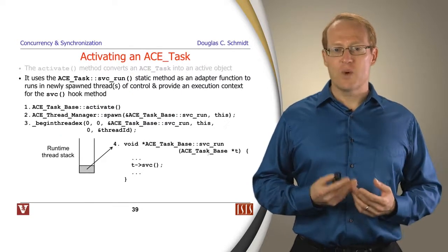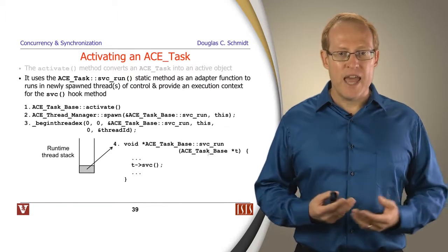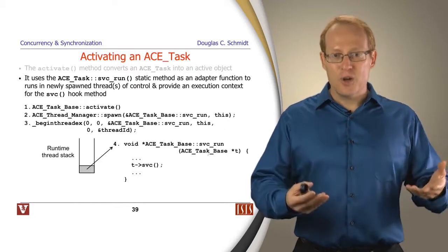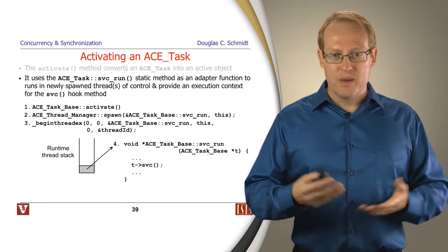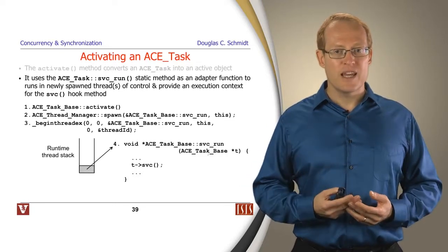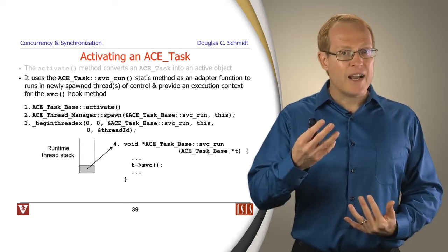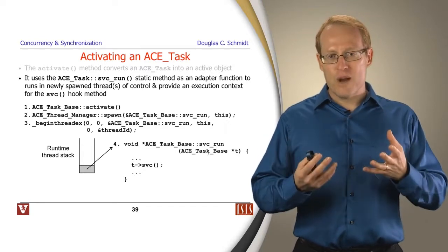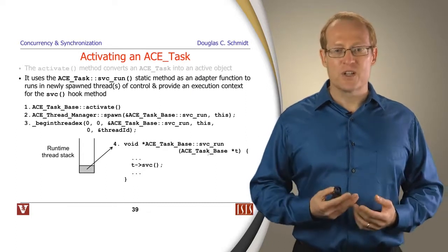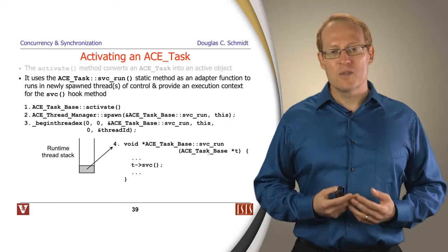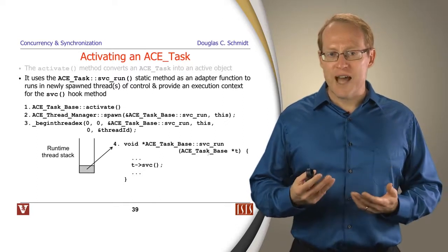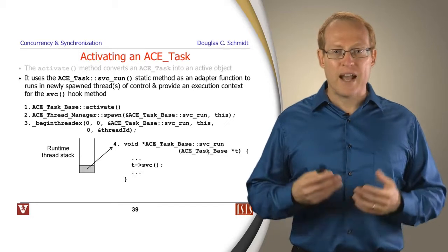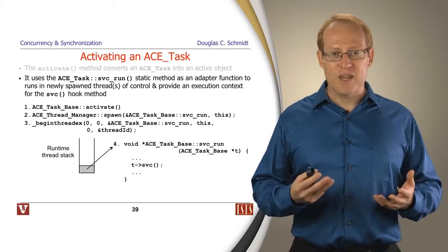When you call activate, what actually happens under the hood is that it uses some mechanisms available in ACE. It goes ahead and calls the ACE thread manager spawn method, and that in turn will reach down into the low-level operating system portability layer and call whatever OS-specific thread creation routine is needed, which in turn will create a stack to run the thread on. And passed into that thread function will be the address of the task itself. The thread start function is something called service run, and as you can see here in this particular diagram, what service run does is it plays the role of an adapter to take the task object that's passed in and then call its service hook method back in a new separate thread of control. So that's how you make things run actively.